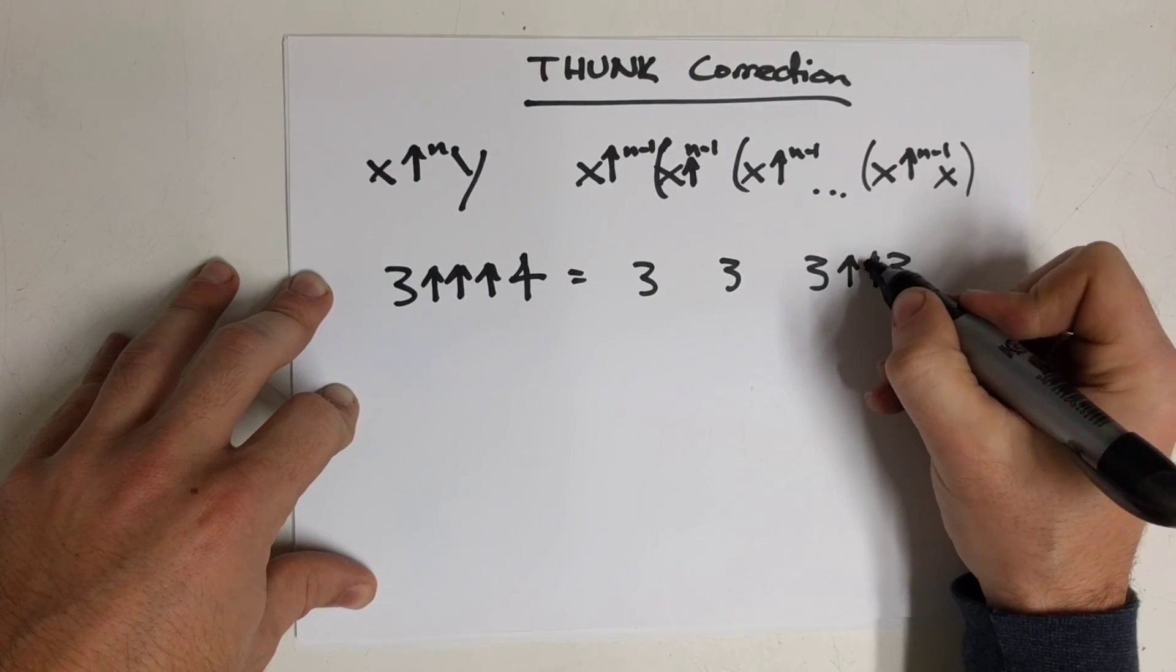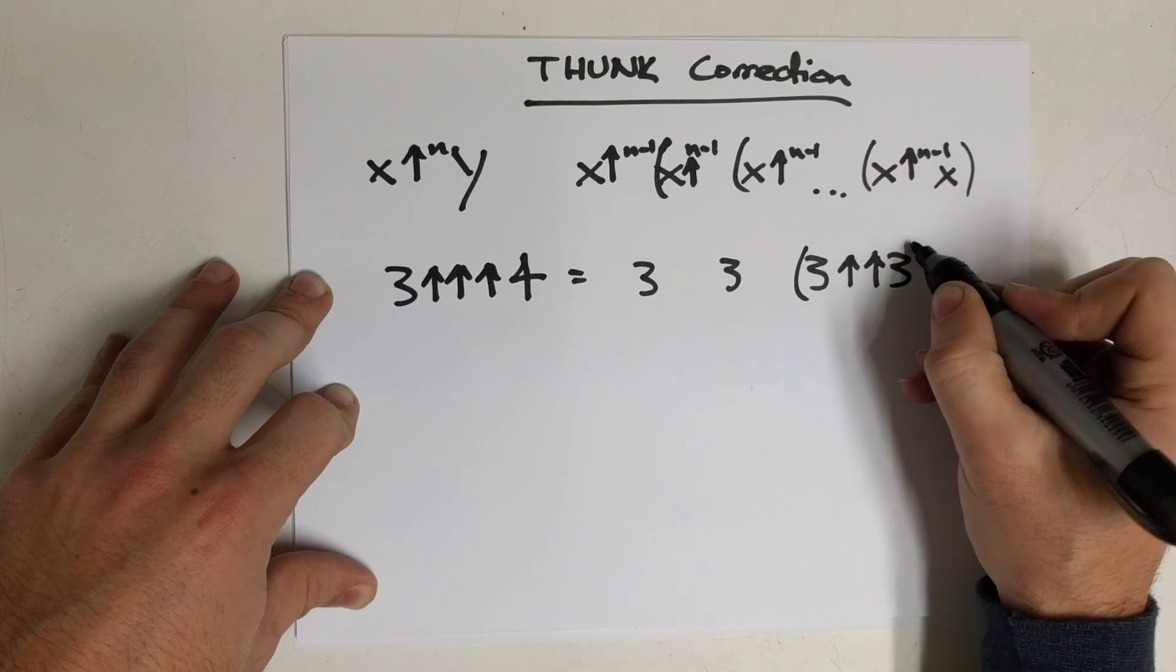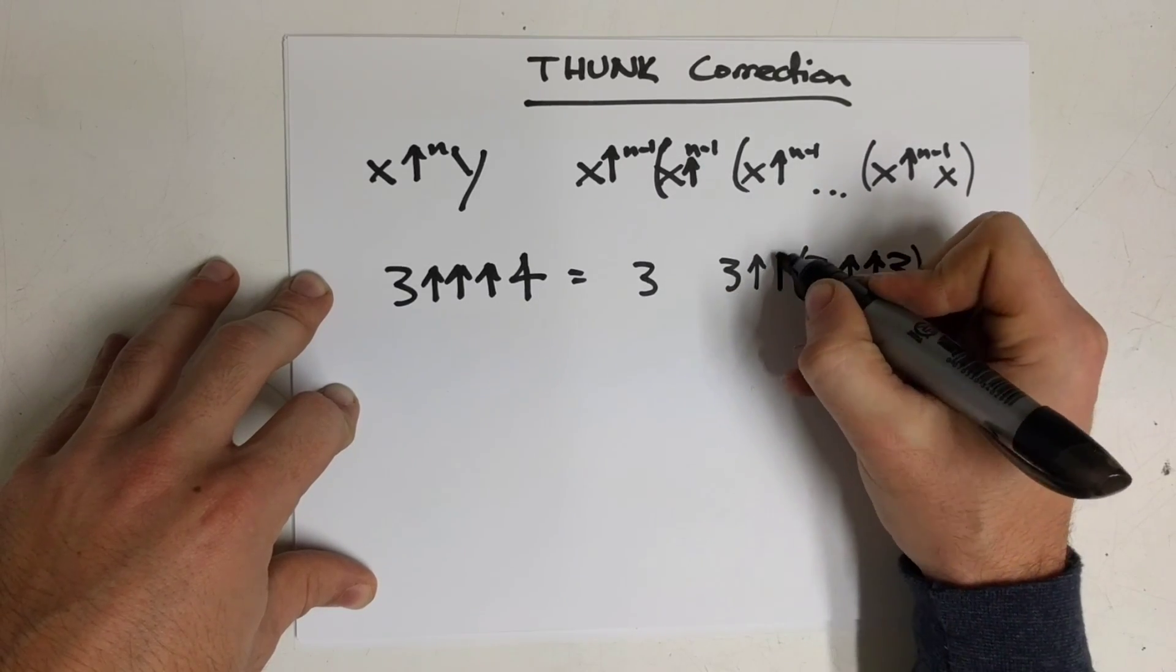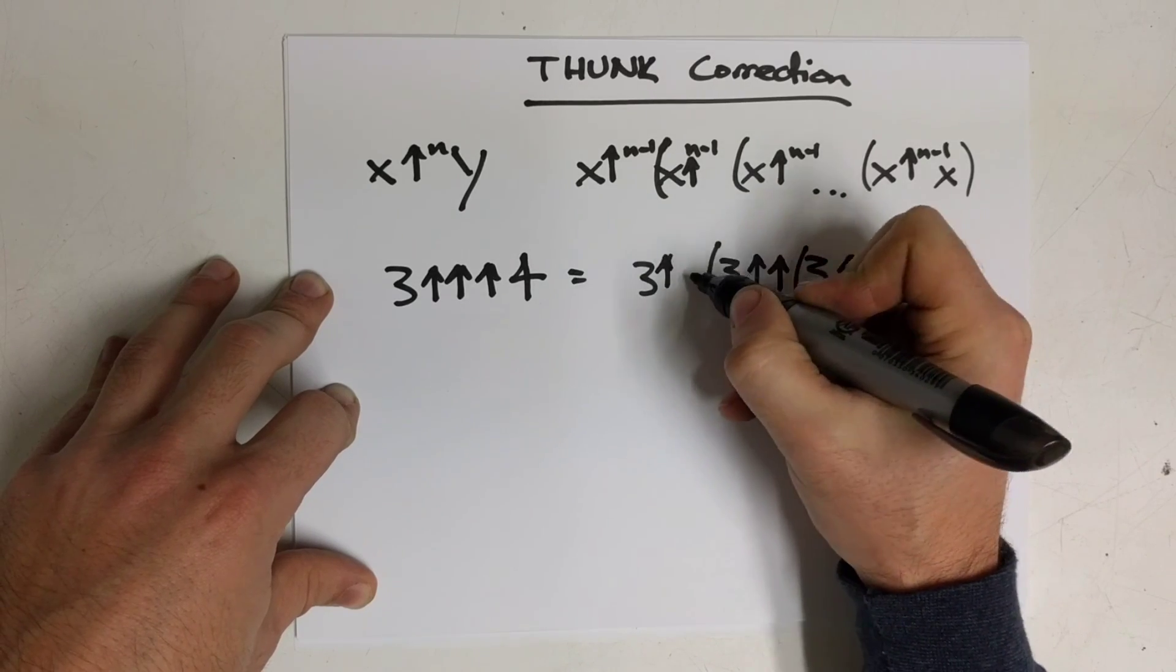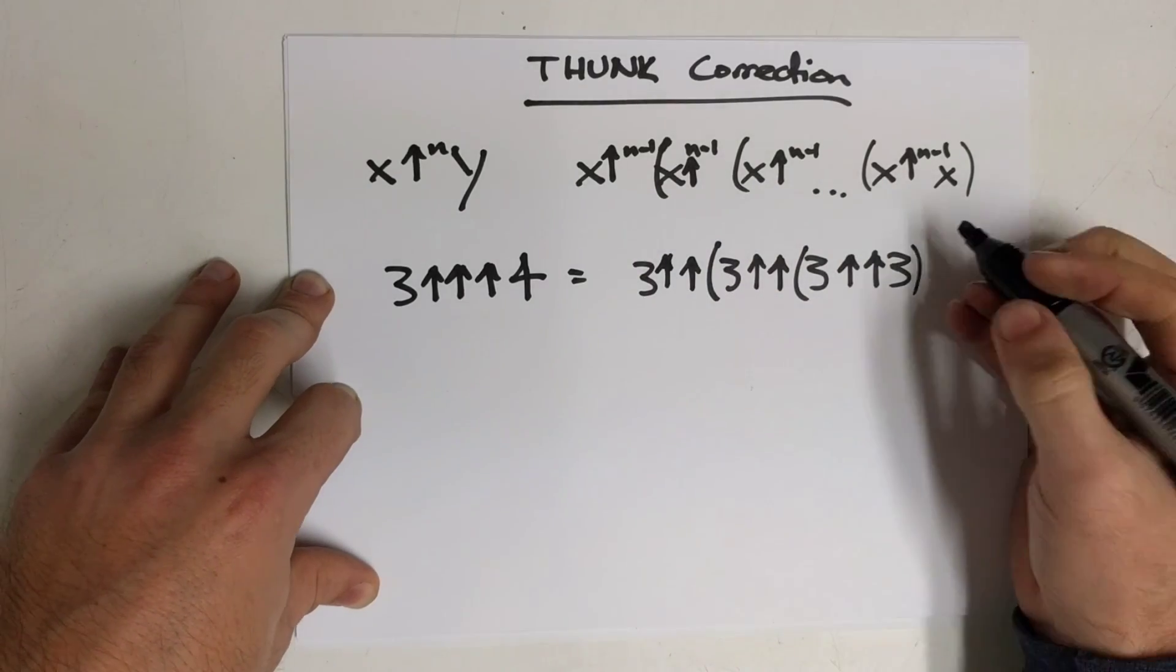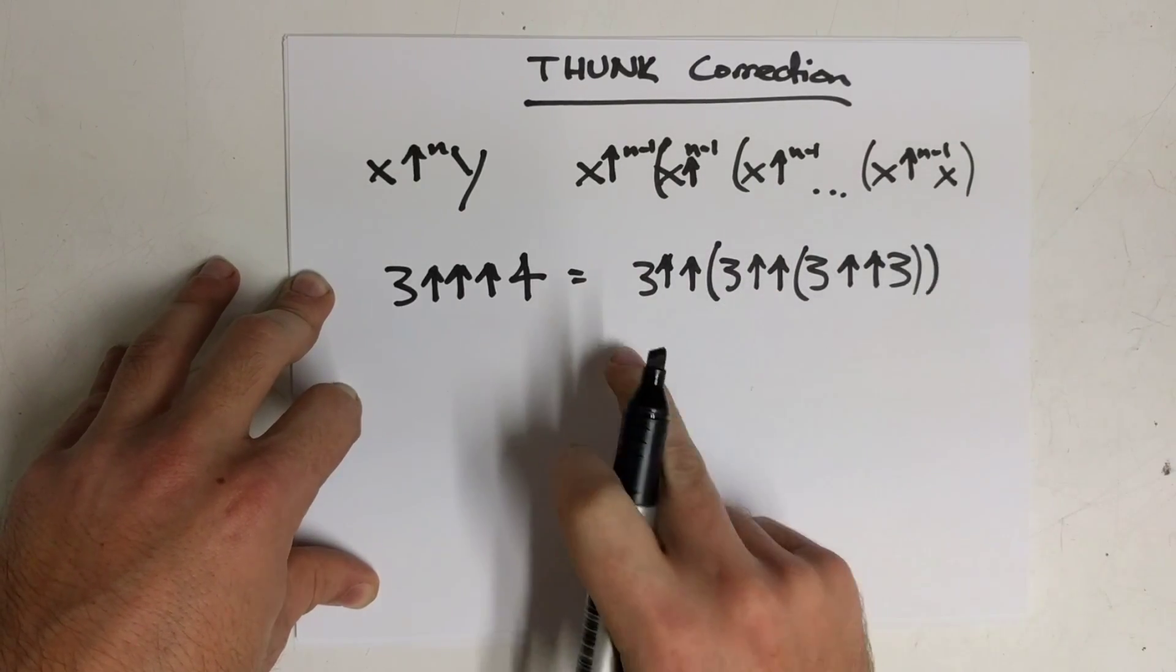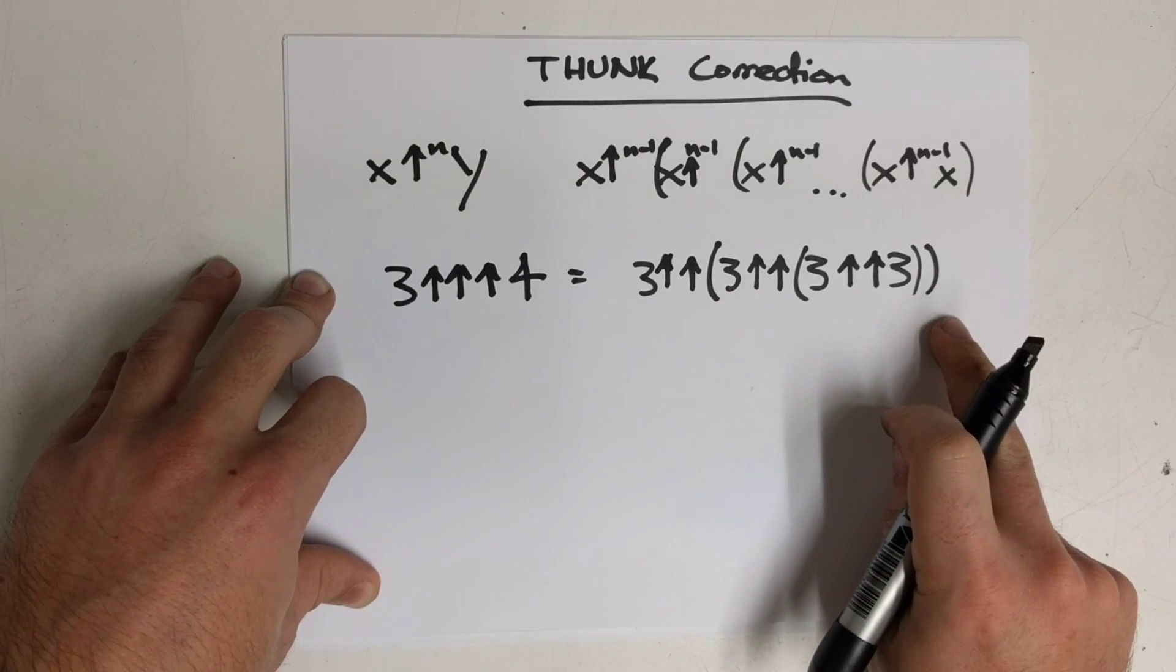So 3 double up 3, 3 double up of that expression, 3 double up of that expression. So this is a much larger number than what I was describing.